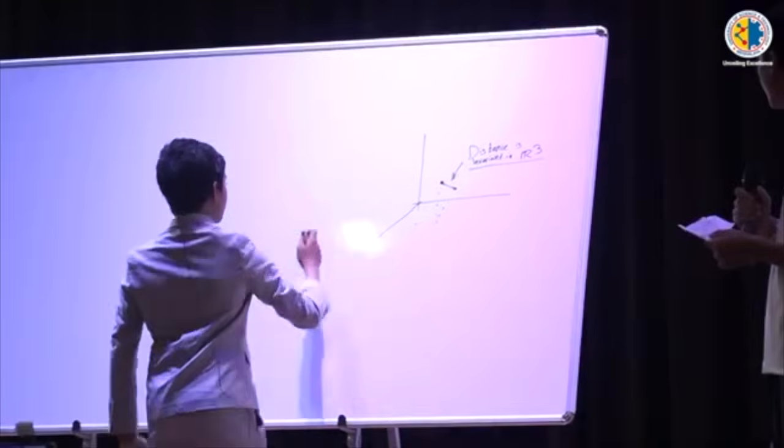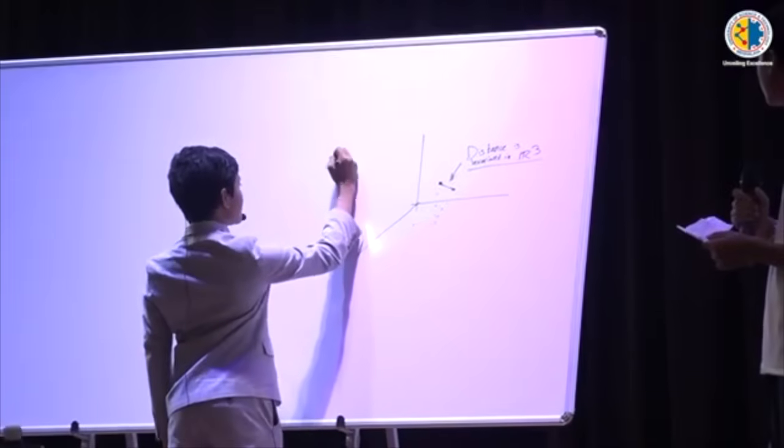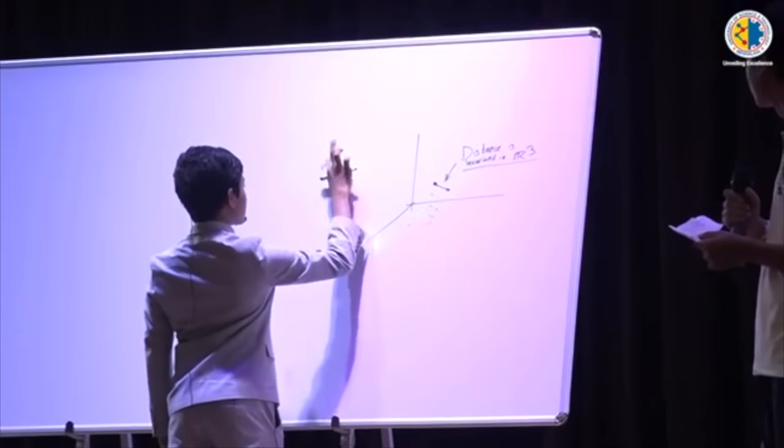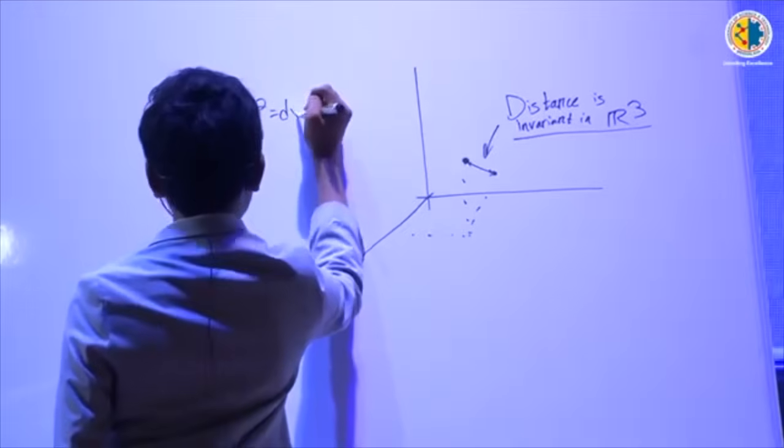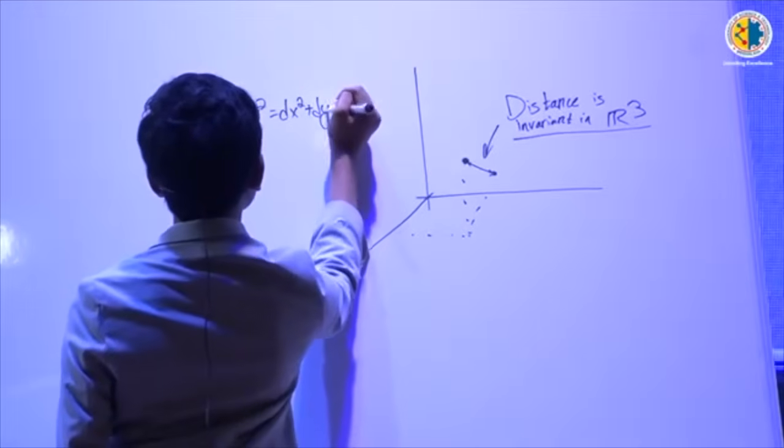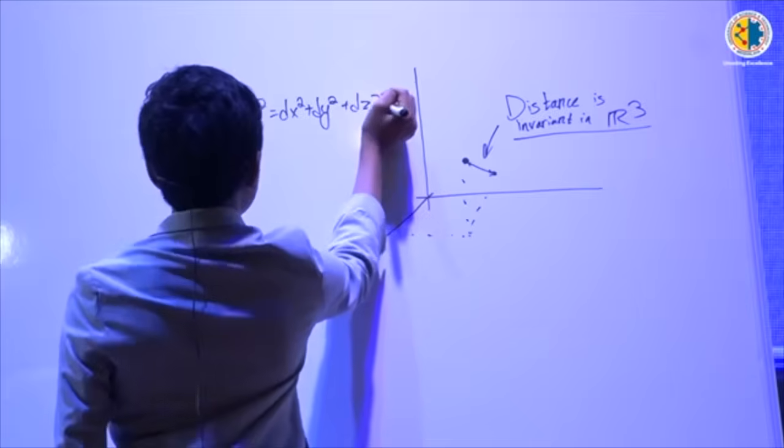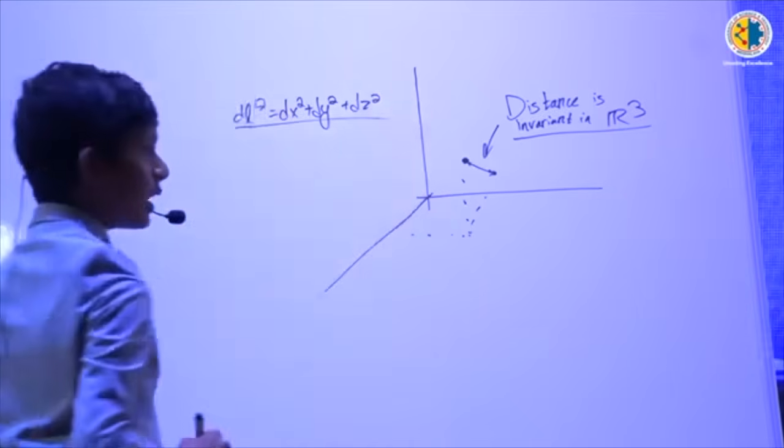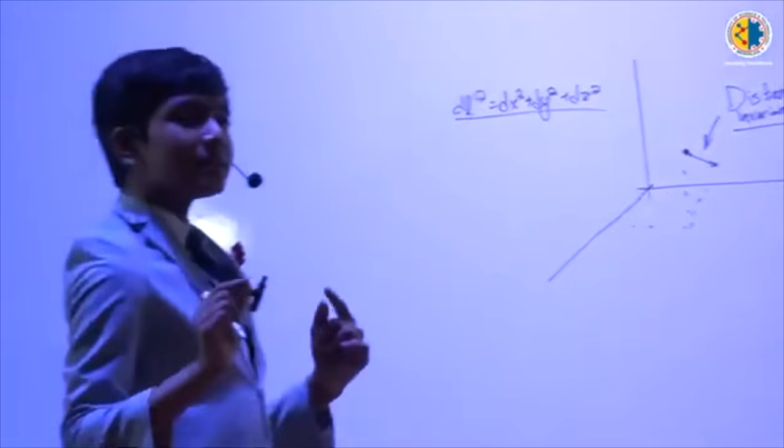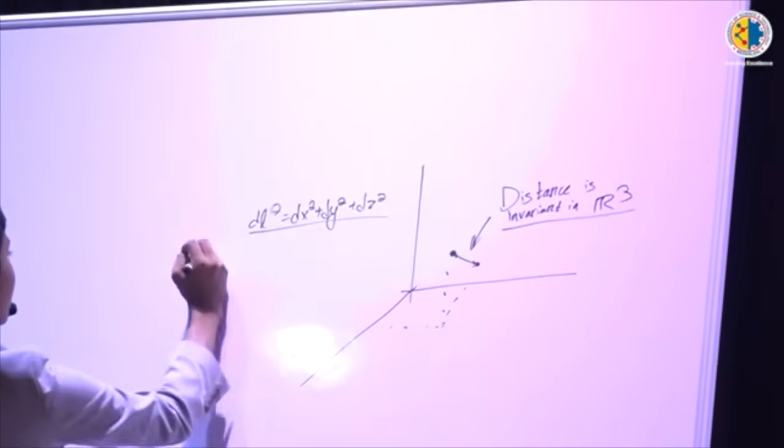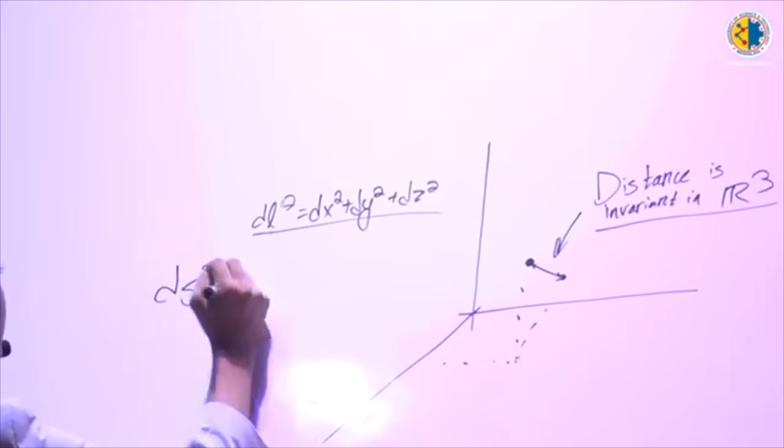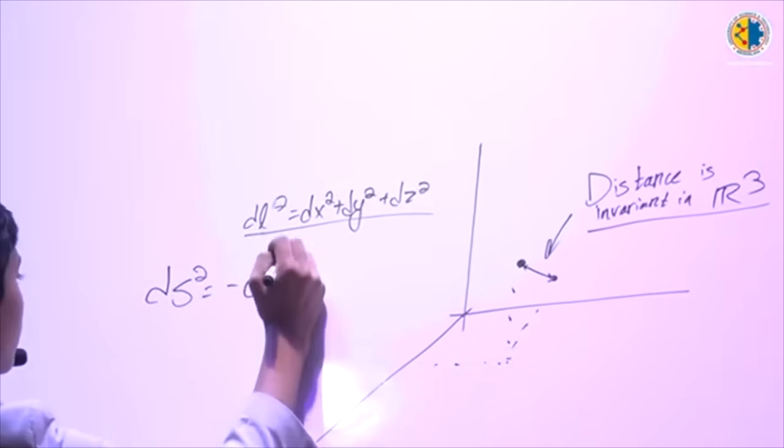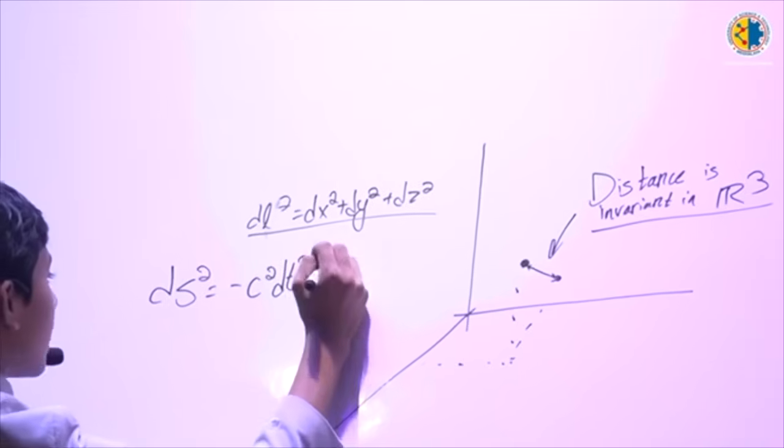Now, instead of our constant being something like dl squared equals dx squared plus dy squared plus dz squared, instead of this being our space-time interval, now to keep the speed of light constant we have to add an additional component. And this is what leads to time dilation.